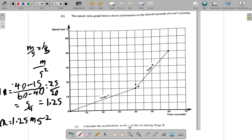So acceleration during stage B is 1.25 meters per second squared.